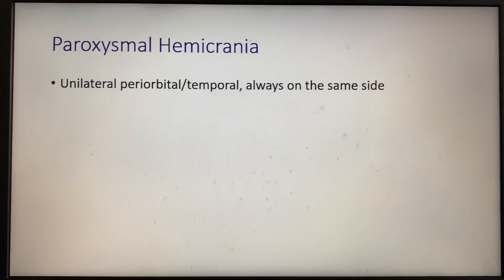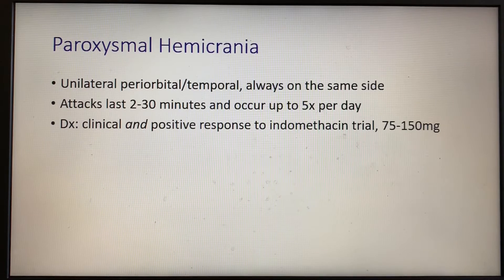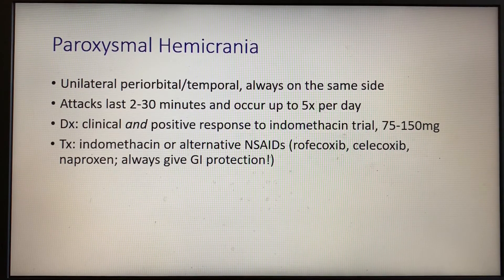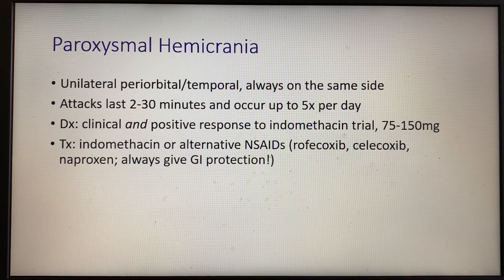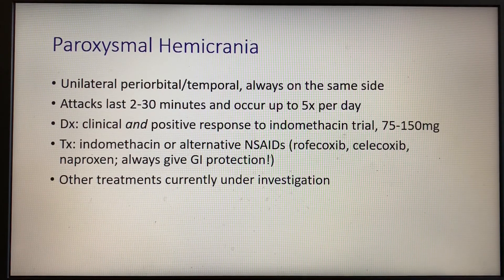Paroxysmal hemicrania is a unilateral, periorbital, or temporal headache that is also side-locked. Attacks tend to last 2 to 30 minutes and occur up to 5 times per day. The diagnosis here is also clinical, but one diagnostic criterion is that you need a positive response to an indomethacin trial. You can start at about 75 mg and work up to 150 mg PO every day before calling the trial negative. Treatment would be long-term indomethacin or an alternative NSAID. Always remember that with long-term NSAID treatment, it is prudent to give GI protection.